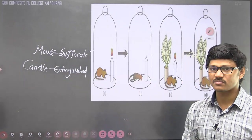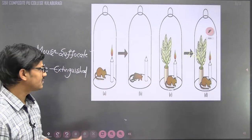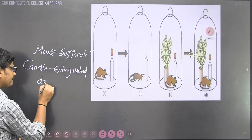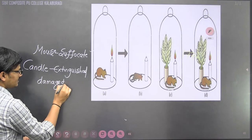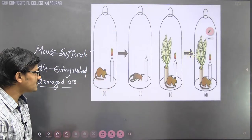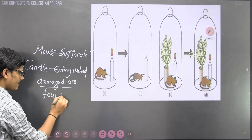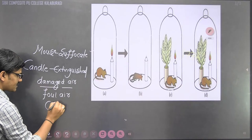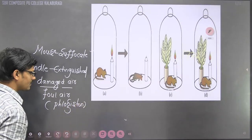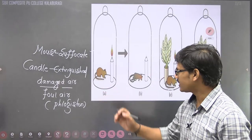Priestley started thinking about the reason: why did the mouse die and the candle get extinguished? He concluded that the breathing of the mouse and the burning candle both damaged the air. He predicted that all the air in the bell jar was damaged and called this damaged air 'foul air,' using a specific term called phlogiston.